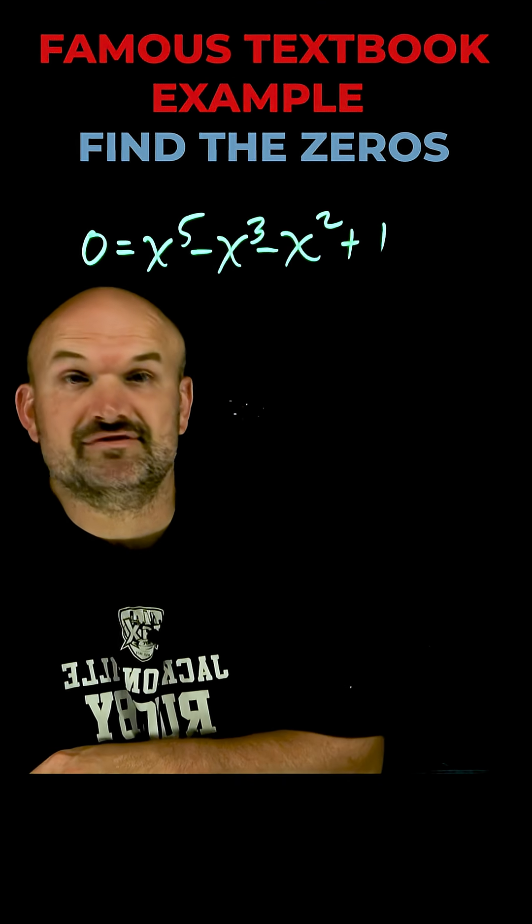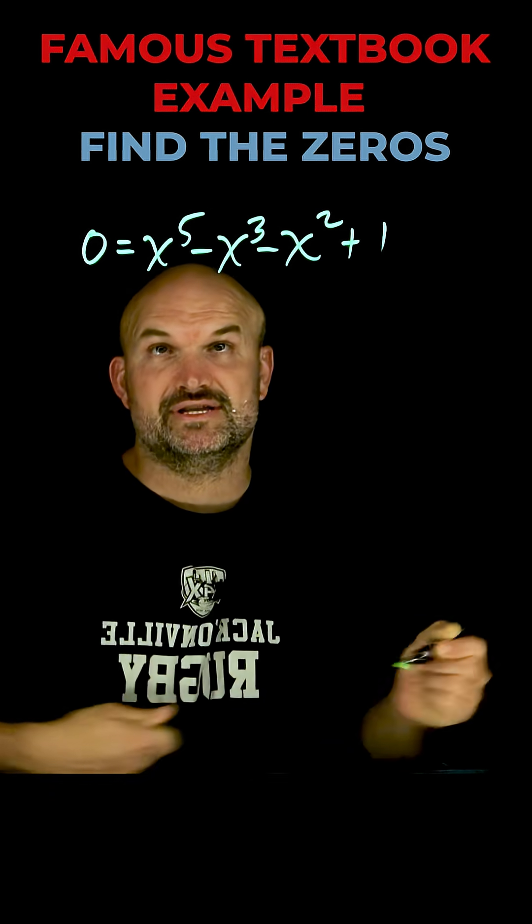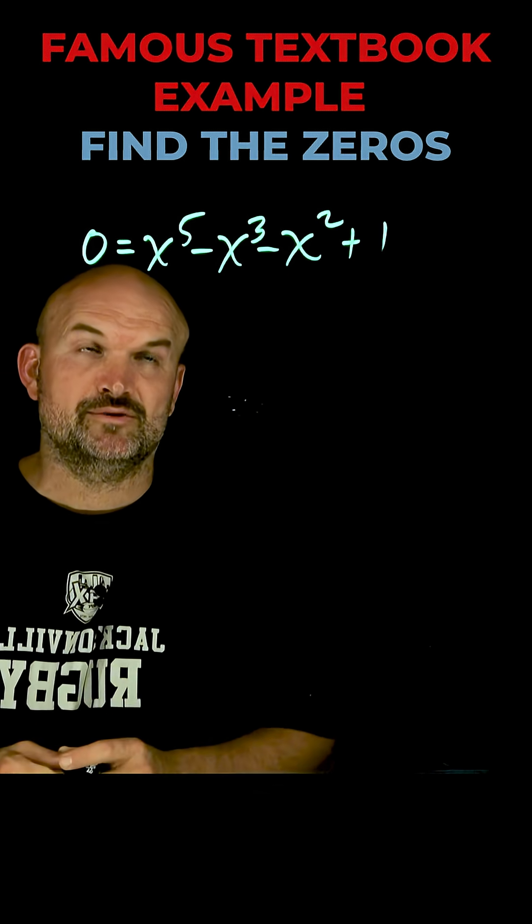Here's a famous problem that you see almost in every single textbook for how to find the zeros of a polynomial by factoring. The first thing I want to do is recognize this is four terms, so the best way to approach that is going to be factoring by grouping.